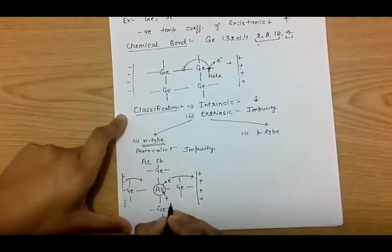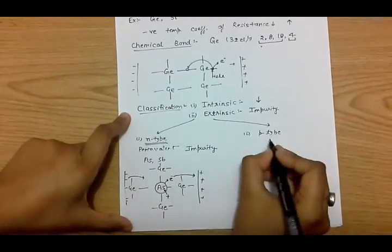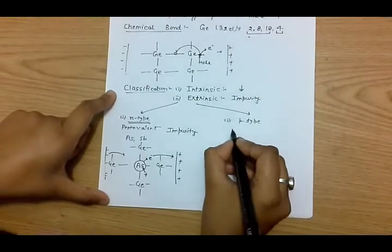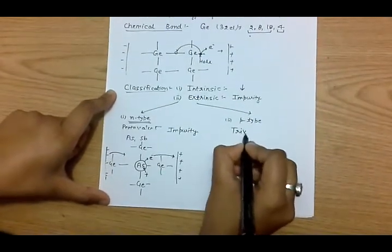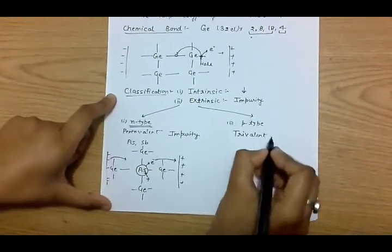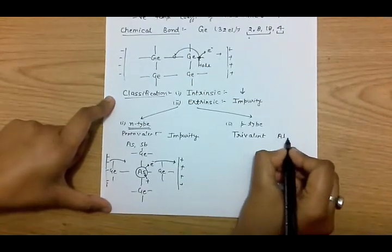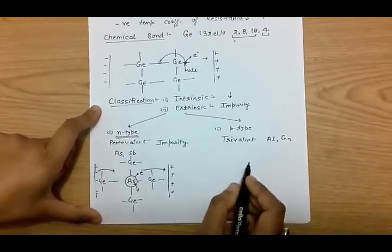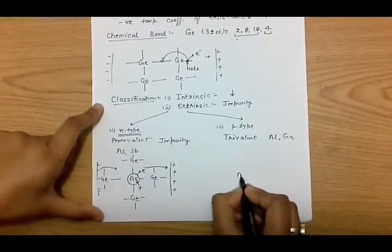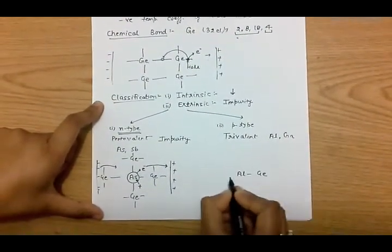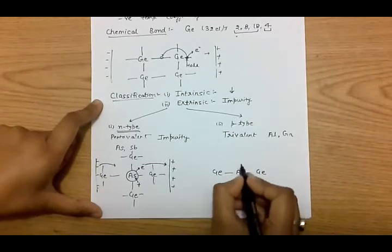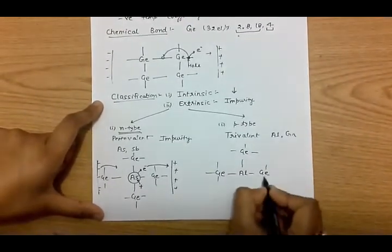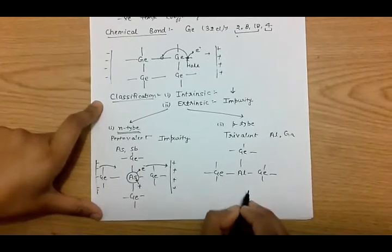The second type is the P-type semiconductor. P-type semiconductor materials are those in which a trivalent impurity is added, such as aluminium or gallium. Trivalent means they have only three valence electrons. When aluminium is added to germanium, its three electrons are used to make three covalent bonds with germanium, but the fourth bond space remains empty.